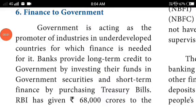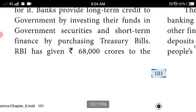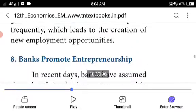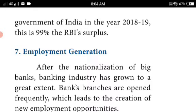Commercial banks also finance the government. The government acts as the promoter of industries in underdeveloped countries and needs finance for this purpose. Banks provide long-term loans and credit to the government by investing in government securities and short-term finance by purchasing treasury bills. The RBI gave 68,000 crores to the government, and in 2018–19, a 99% surplus happened due to credit created by the RBI.